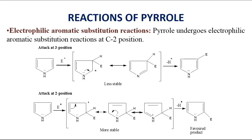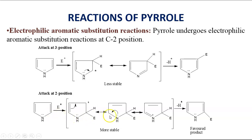Now let us see the reactions of Pyrrole. Pyrrole undergoes electrophilic aromatic substitution reaction at the second position. Why only at the second position? If the attack of the electrophile takes place at the third position, we get two resonating structures. Whereas if the attack takes place at the second position, we get three resonating structures.